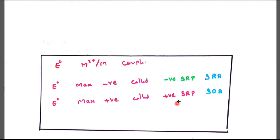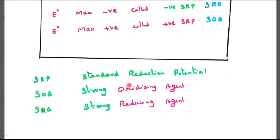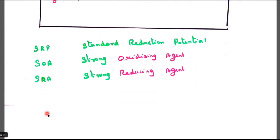Almost whether negative or positive, generally we used to call the reduction potential, standard reduction potential. So SRP is called standard reduction potential. SOA is strong oxidizing agent. SRA is strong reducing agent.